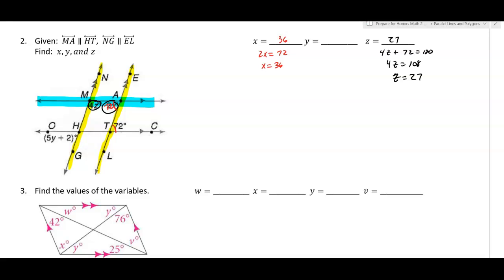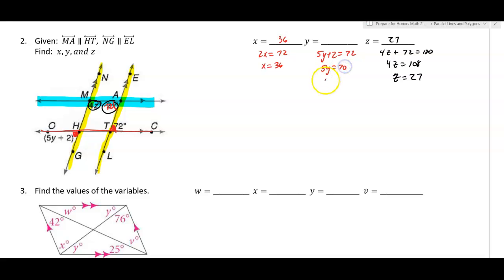Looking at the 72 degree angle — using the yellow parallel lines and this transversal, those are alternate exterior angles, meaning they are congruent. So 5y plus 2 equals 72, giving 5y equals 70, and y equals 70 divided by 5, which is 14.